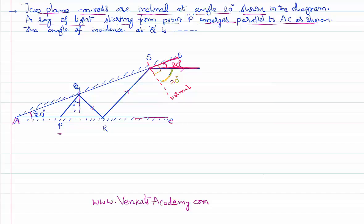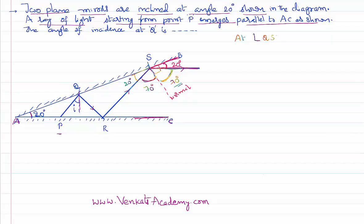This is the incident light, this is the reflected light, and this is the normal. By the law of reflection, angle of incidence equals angle of reflection. Since the angle of reflection is 70 degrees, the angle of incidence is also 70 degrees. The normal to the plane mirror gives a total of 90 degrees, so the remaining angle is 20 degrees. Therefore, angle QSR equals 20 degrees.